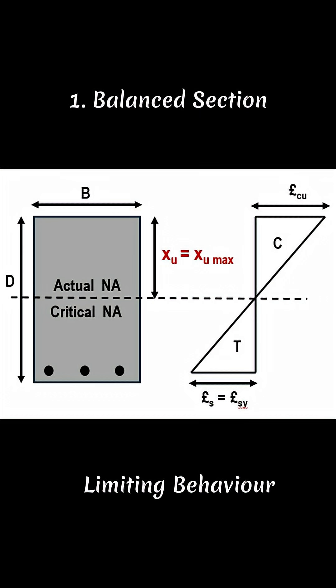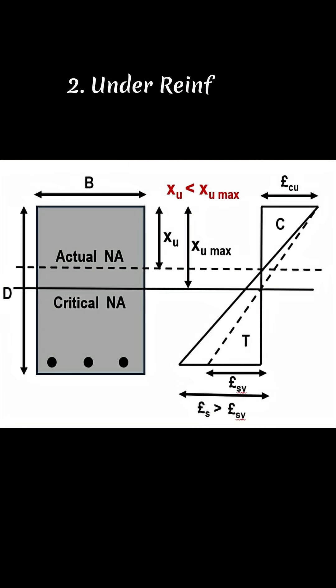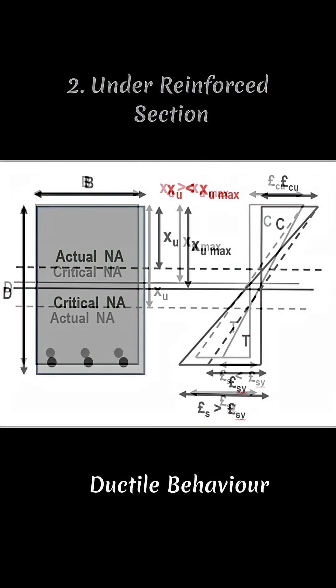In an under-reinforced section, xu is less than xu max. Steel yields before concrete crushes. It's a warning before failure.